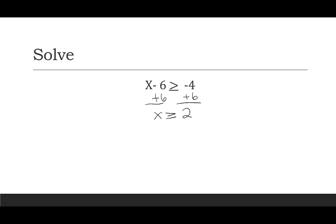Remember when you solved equations you got one solution, but when you solve inequalities you get infinitely many solutions. So our first way to write the answer is as an inequality: x is greater than or equal to 2. We can also graph that on a real number line. Because it says greater than or equal to, I have a solid dot at 2 and then I shade to the right. The highlighted portion including that endpoint at 2 is my solution set.